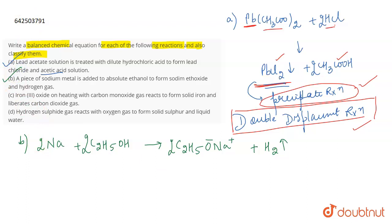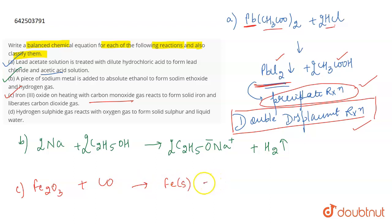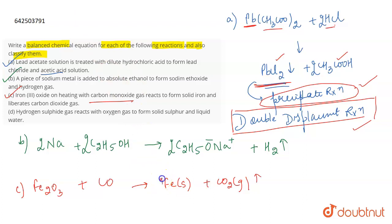Talking about the next part: iron(III) oxide on heating with carbon monoxide gas. Iron(III) oxide is Fe₂O₃. When heated with CO, it leads to the formation of solid iron (Fe) along with carbon dioxide gas (CO₂). To balance this reaction, you get 2 Fe on the product side because you have Fe₂O₃, then 3 CO on the reactant side, and 3 CO₂ on the product side. This is the correct balanced chemical equation.